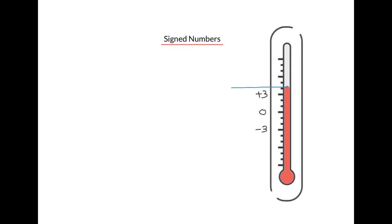But what if we placed 0 in a different spot? Let's say we put 0 at the very top. Again, as we move down the scale, the temperature is getting colder or negative. To find the temperature, we locate the top of the reading and count how many places away from 0 it is. In this case, it's about 5 places down from 0, or below 0.